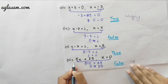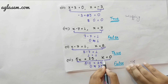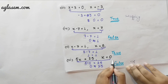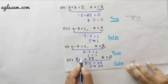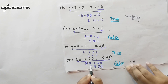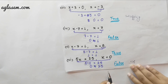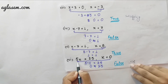In the next question, the equation is 5x equals to 25 and the value of x given is 0. We put the value into the equation and solve the left hand side: 5 into 0 equals to 25. 0 is not equal to 25, hence this value of x does not satisfy the equation.